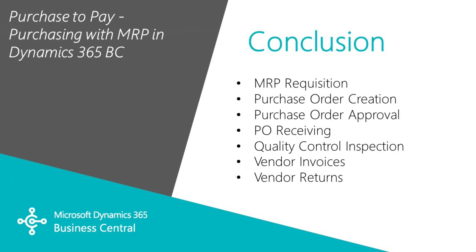And that's the process. I started with an MRP requisition in the planning worksheet, created a purchase order, sent it through approval, received the purchase order, did a quick quality control inspection, and entered the vendor invoice. We determined that one of the lots was bad, so we returned it to the vendor — created a vendor return, shipped it back, applied that return to the original invoice, and posted it.